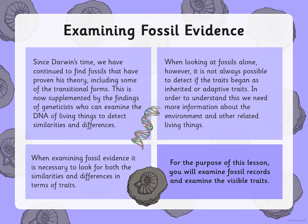Examining fossil evidence since Darwin's time, we have continued to find fossils that have proven his theory, including some of the transitional forms. This is now supplemented by the findings of geneticists who examine the DNA of living things to detect similarities and differences. When examining fossil evidence, it is necessary to look for both similarities and differences in terms of traits. It is not always possible to detect if traits began as inherited or adapted, so we need more information about the environment and other related living things.